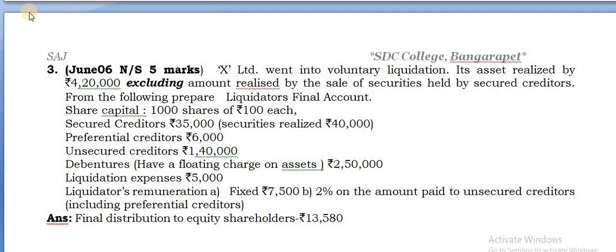We will see the third question next. X Limited went into voluntary liquidation and its assets realized 4,20,000 excluding the amount realized by the sale of securities held by the secured creditors.